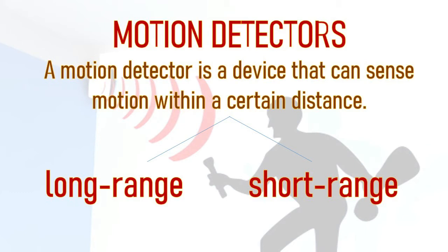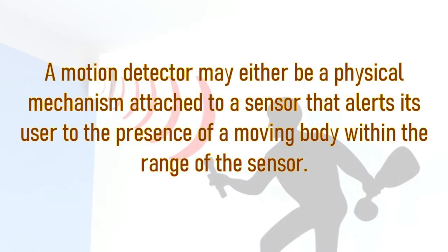As the name suggests, long-range detectors sense motion from long distances, while short-range detectors sense motion at close proximity. A motion detector may be a physical mechanism attached to a sensor that alerts its user to the presence of a moving body within the range of the sensor.